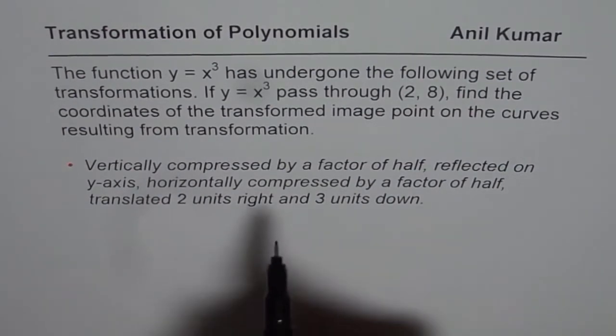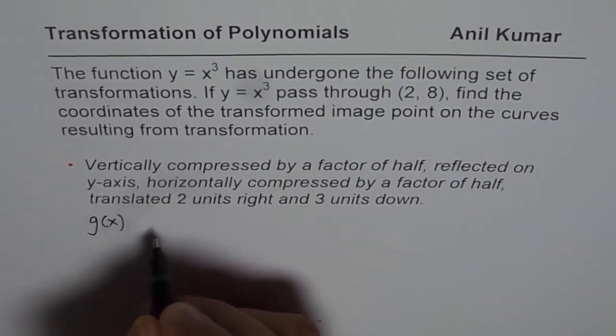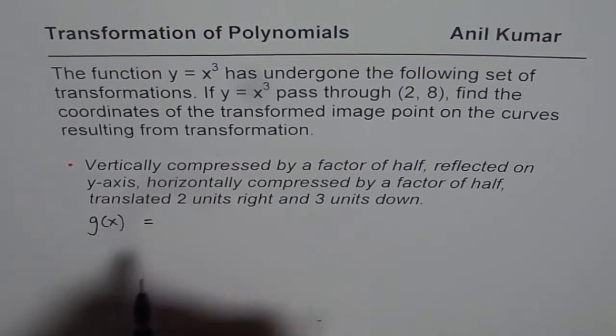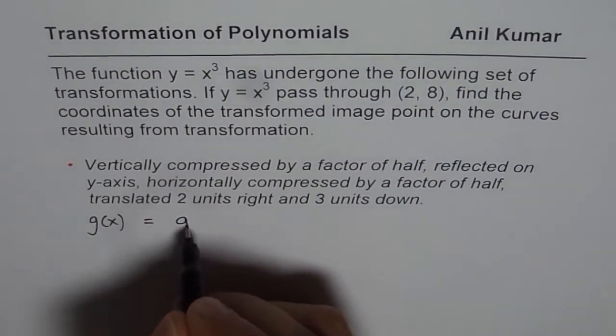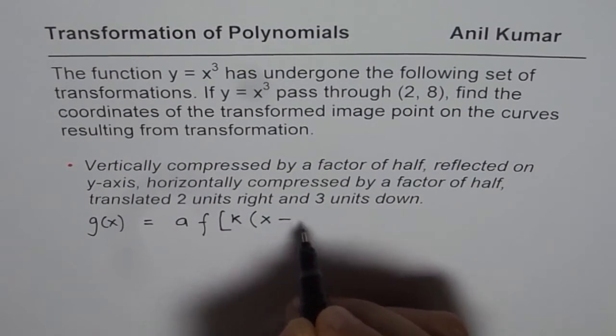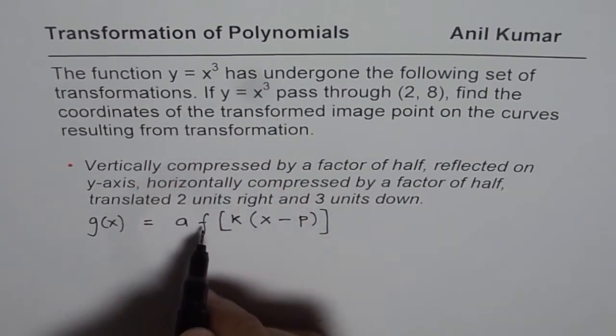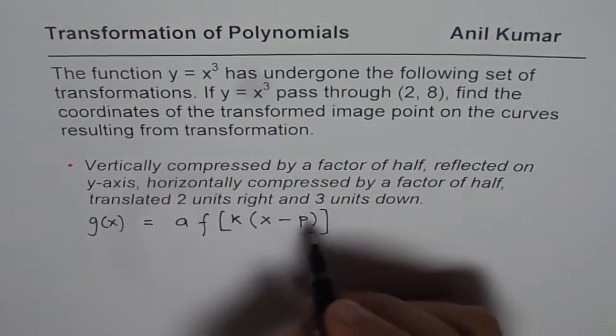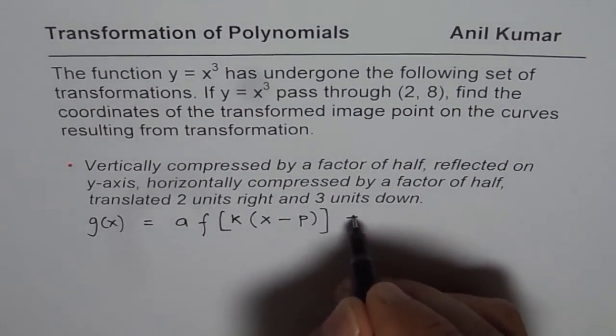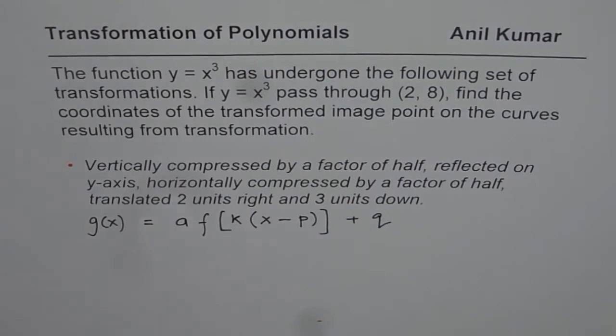Let me write down the general equation. Let's say the transformed function for us is g(x). Then in general, this g(x) could be written as a times f of k(x - p) plus q, where k is the horizontal stretch or compression factor. Since it is cubic, I'm writing a very general equation. So whatever is the type of function, that is what we have.